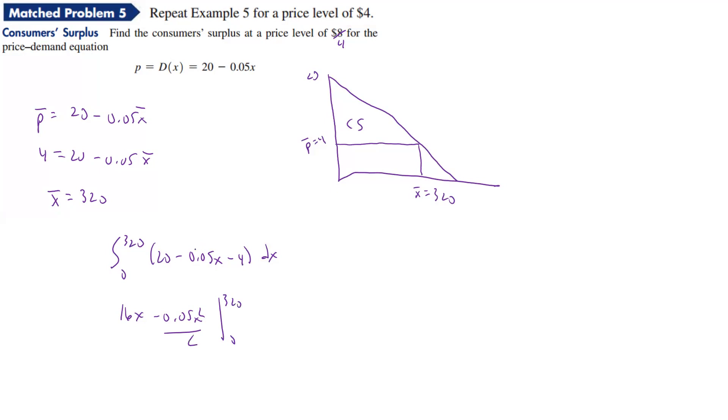So I'm kind of doing multiple steps here, hoping you can get used to doing that. So you just take the 20 minus 4, get 16. The antiderivative of 16 is 16X, then the antiderivative of that is this. And so now we're going to take 16 times 320 minus 0.05 times 320 squared all over 2. And if you plug in 0, those are 0. So now we just have to plug that in. So we have 16 times 320 minus 0.05 times 320 squared divided by 2.